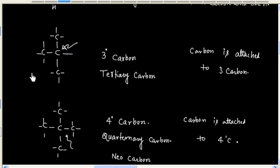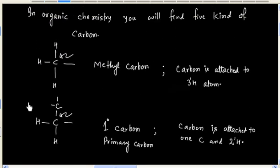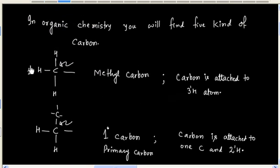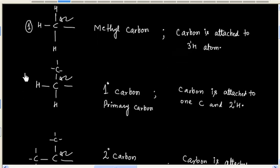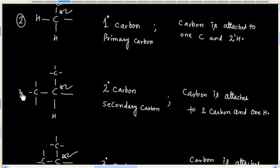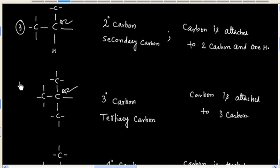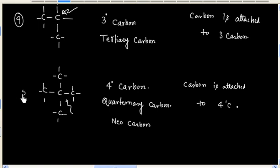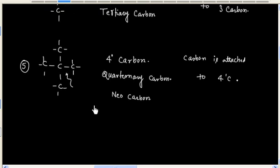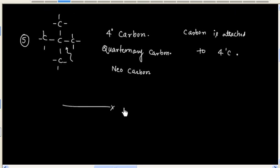So basically we have 5 kinds of carbon: one is methyl carbon, next is 1 degree carbon, next is 2 degree carbon, then we have 3 degree carbon, and finally we have 4 degree carbon — also called quaternary carbon or neocarbon.